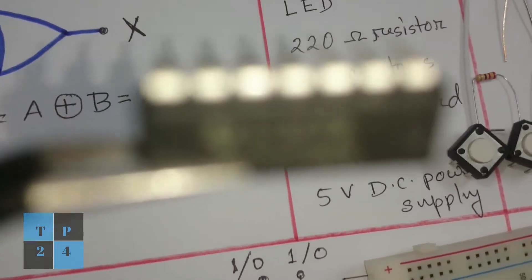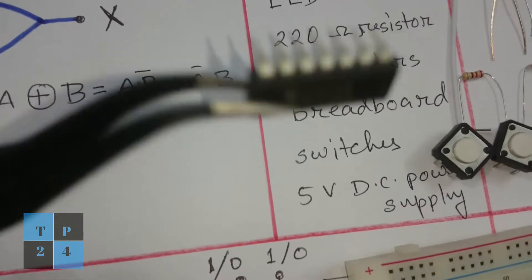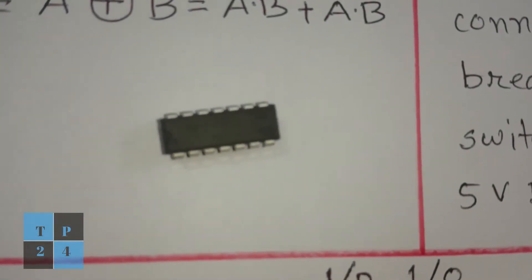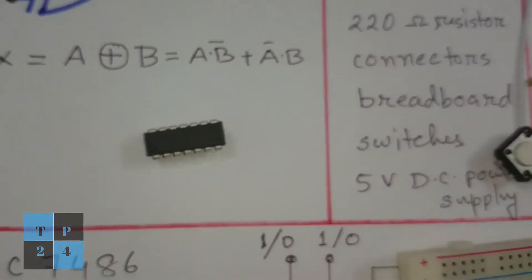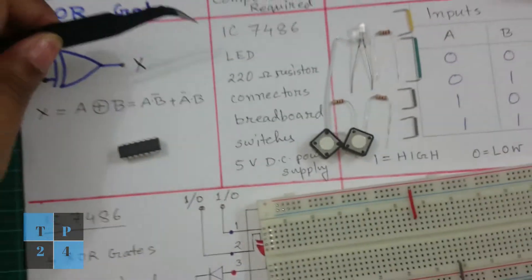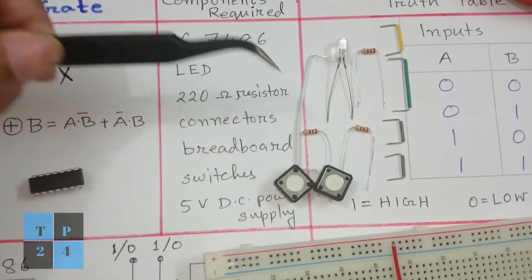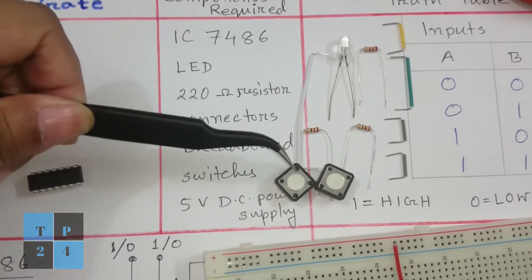So you can see it is a 14 pin IC and to implement this XOR gate I need some extra components. One LED, a few connectors, 220 ohm resistors and switches.